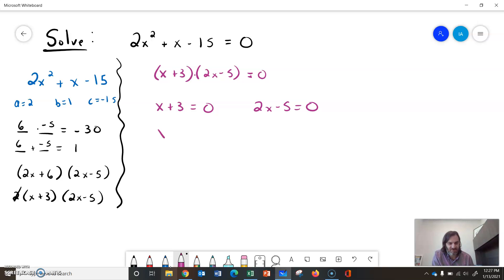x plus 3 equals 0, we'll pull the 3 over and gives us x equals negative 3. That's one solution.